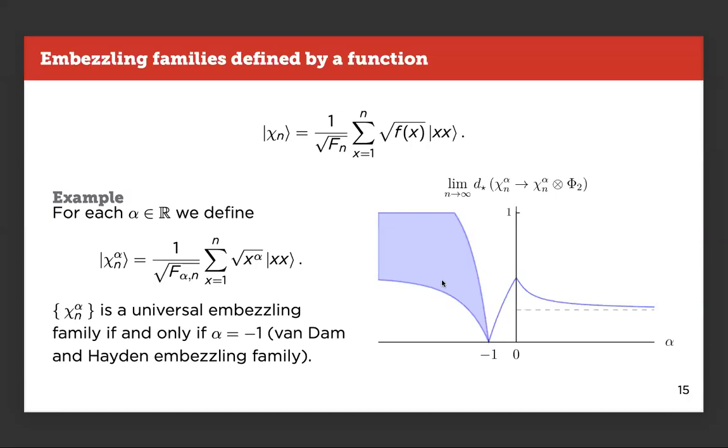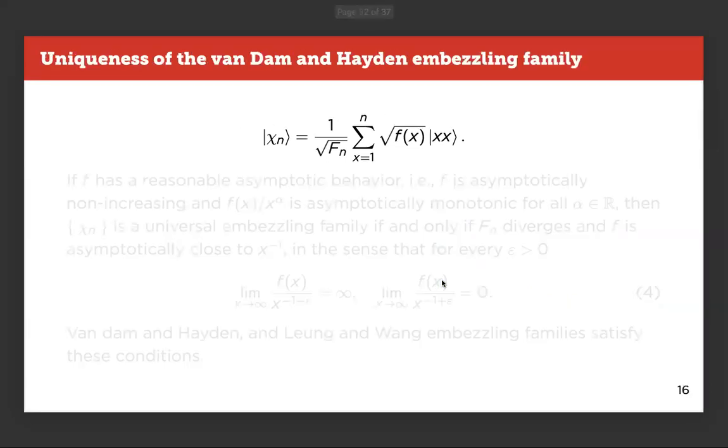So we try not to move too much, maybe. We don't want to influence the cables. So to give an example of what we mean, we can define for every real number α a family of states where the coefficients are x to the i^α. Like the Van Dam and Hayden one was 1/√x, so it was the special case when α was -1. And what we show is that that is the only case in which we get an embezzling family. Everything else, the limit of that conversion distance is above zero. And it goes to zero only when α is equal to -1.